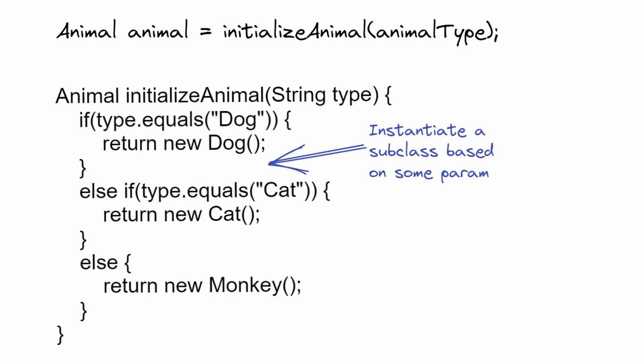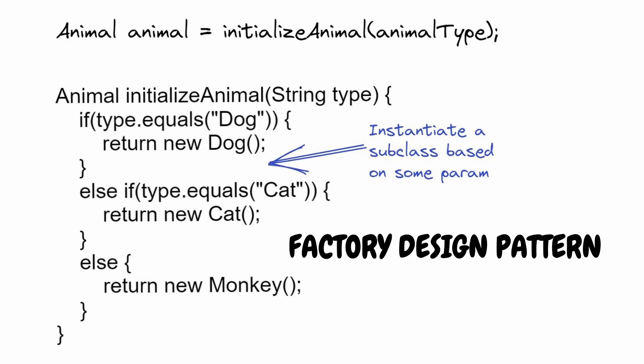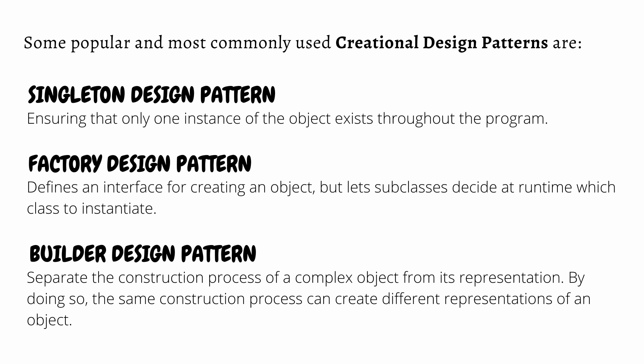Based on our requirement, it can happen that at runtime, based on some parameter, we need to make a decision as to which particular subclass to instantiate. Here we can use the factory design pattern, which is one type of creational design pattern. There can be other design problems related to object creation as well, and in such cases we must use creational design patterns to provide a more general and flexible approach of creating an object.